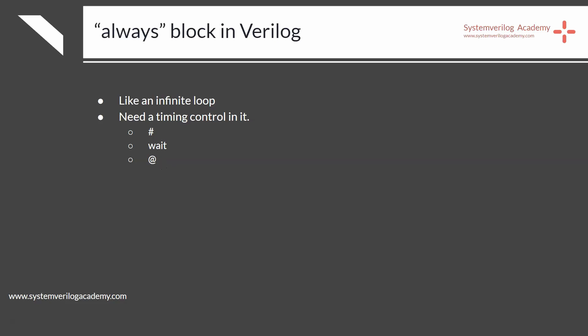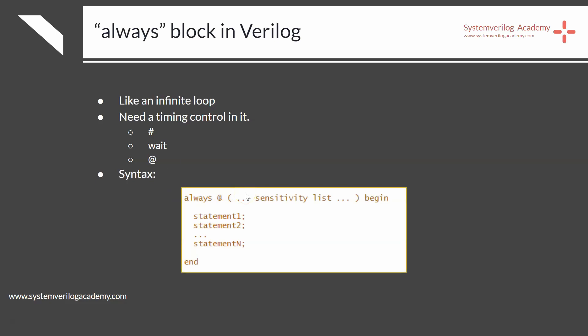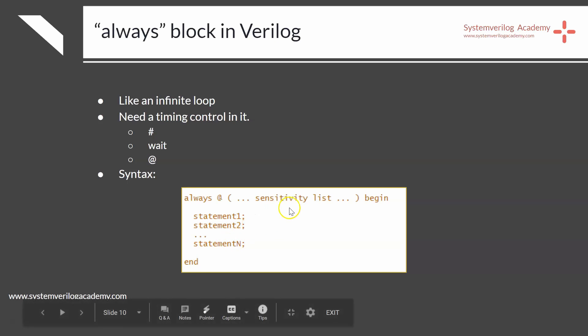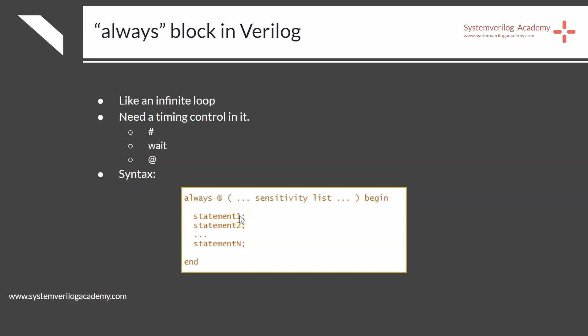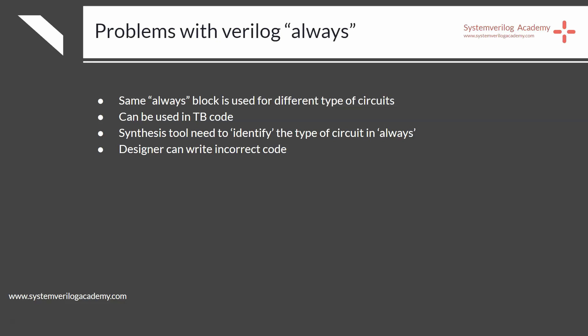The generalized syntax is: always @(sensitivity_list) begin multiple statements end. Whenever any variable in the sensitivity list changes its value, the block will be evaluated. The multiple statements within the block will be evaluated sequentially — first statement one, then statement two, and so on. These are the issues with the general-purpose always block, and SystemVerilog avoids this ambiguity by adding specific always block types for different circuit types.